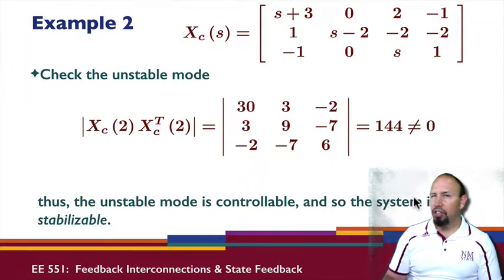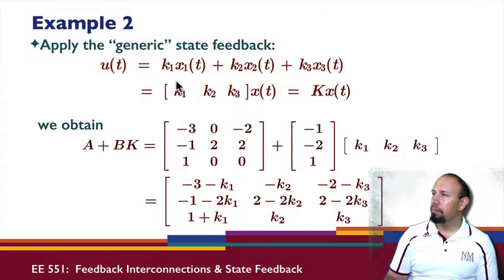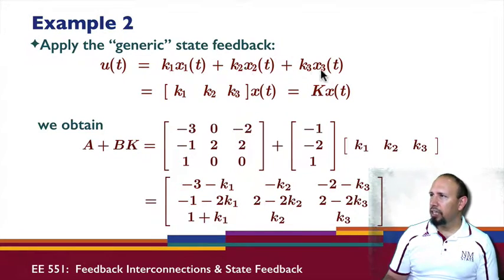It turns out the system is not controllable, but it is stabilizable. So I use this generic state feedback law, that is K1 times X1, K2 times X2, K3 times X3, which I can factor out X this way. So this becomes K times X. A plus BK then is given by this expression.